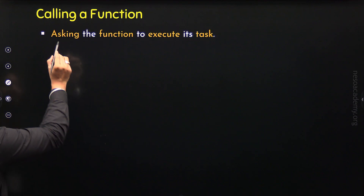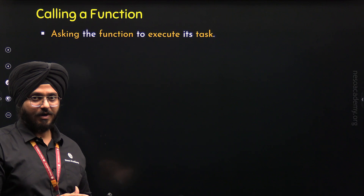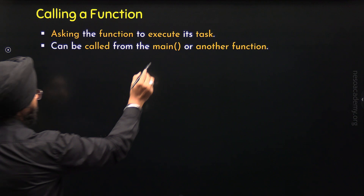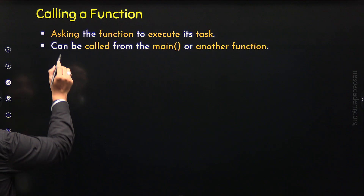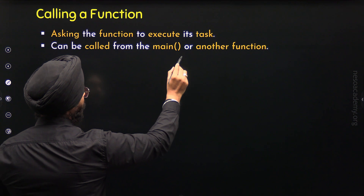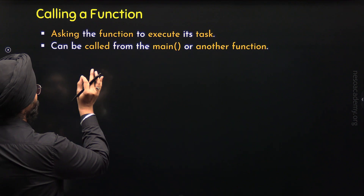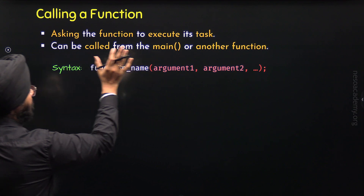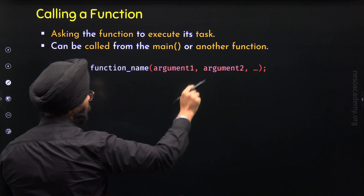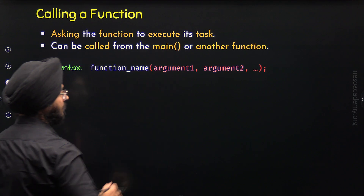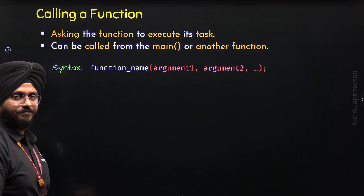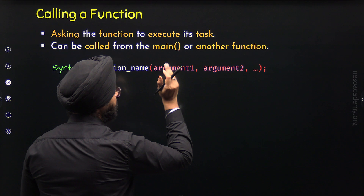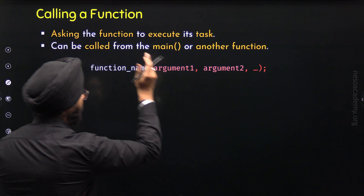Calling a function means asking the function to execute its task. When we call a function, we ask it to simply execute. A function can be called from the main function or from some other function. Here is the syntax to call a function: we specify the name of the function, then within parentheses we provide the arguments based on the parameters we have defined. The number of arguments must match the number of parameters. At the end, we put the semicolon. When we call the function, we do not specify the return type — we simply write the function name and within parentheses provide the arguments, which are the actual values we pass to the function.